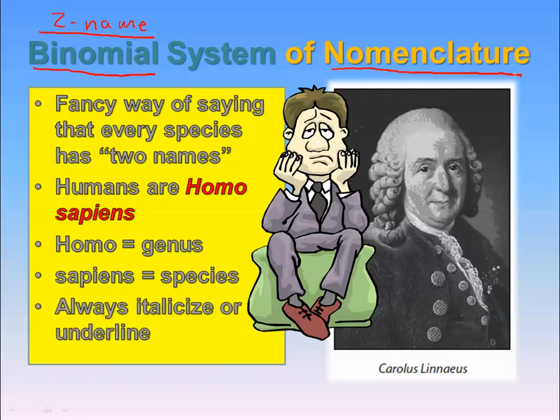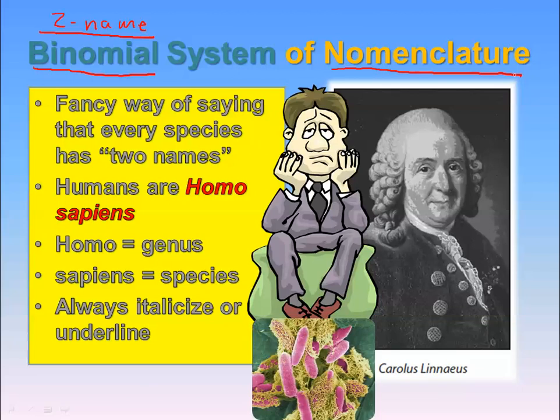We always underline or italicize. When you're typing you can italicize, but if your handwriting is already really slanted, then you can underline it if you're handwriting this in an essay or doing some classification of your own in your garden. Every living thing — every organism that's been identified by humans — has a name.